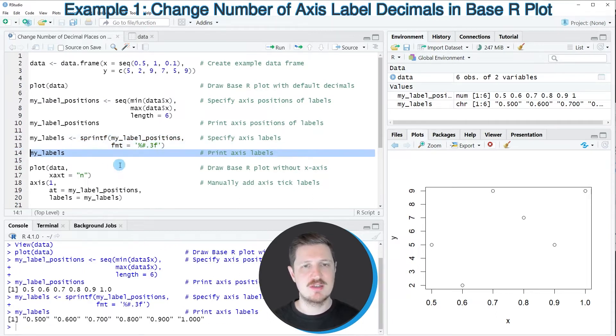And after printing this data object, you can see that we have specified a character string for each label in our plot. And you can see that these character strings have multiple decimal places.